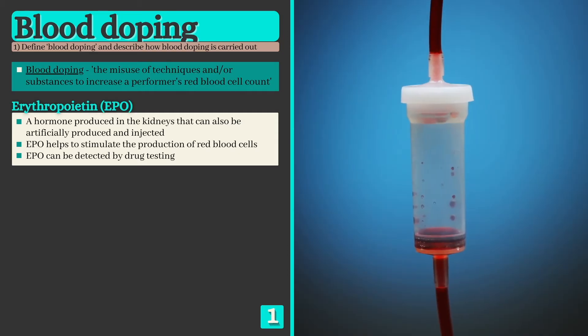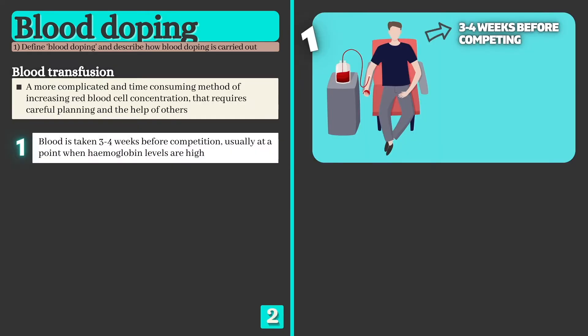This has led many athletes to use a more complicated and time-consuming alternative: blood transfusions. Step 1: Blood is taken from the athlete around 3 to 4 weeks before competition, preferably at a point when hemoglobin levels are at their highest.